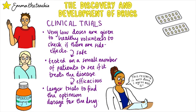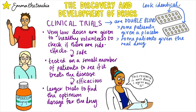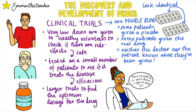Clinical trials are double-blind trials. Some patients are given a placebo while others are given the real drug. The placebo and real drug look identical and are delivered in the same way — both as pills or both as injections. Neither the doctor nor the patient know what they've been given; only the researcher knows. This is done to check if the drug really works or if improvements in health are just due to the placebo effect.